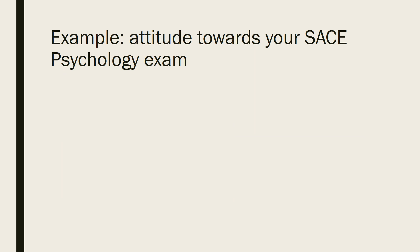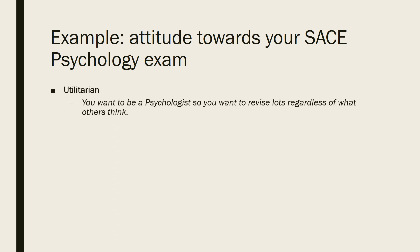Now that we've defined each of the four functions that attitudes can serve, let's look at an illustrative example: your attitude towards your psychology exam. A student may have the attitude that they want to be a psychologist, so they want to do a lot of revision regardless of what others think of them. This attitude serves the utilitarian function as it's helping them achieve their goal of becoming a psychologist by performing well in their psychology exam, maximising rewards and minimising any potentially unfavourable feelings associated with not achieving this goal, minimising punishment.